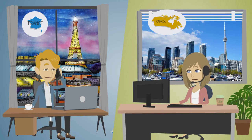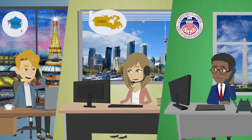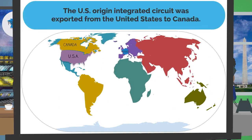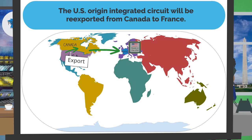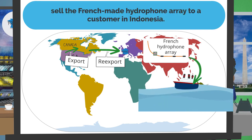Elsa calls BIS, and an export counselor appears on screen. He is sitting at his desk in Washington, D.C. with a view of the Washington Monument from his window. The counselor says: Hello. Thank you for calling the Bureau of Industry and Security. How can I help you? Elsa: Hello, my name is Elsa, and I'm from Canada. I have François from France on the phone, and we would like to learn more about the de minimis rule. There is a specific transaction: I have a U.S. origin integrated circuit in Canada that will be shipped to François in France, and François plans to incorporate it into a hydrophone array and sell the product to customers in Indonesia.